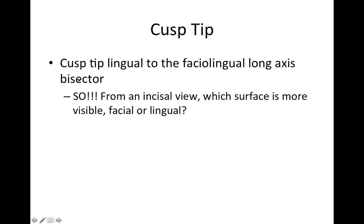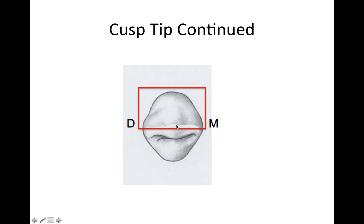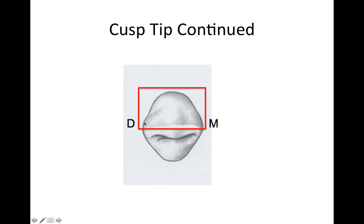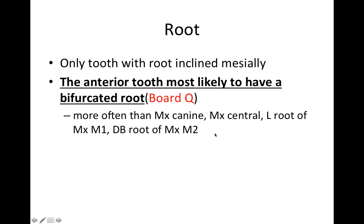You'll see the term 'cusp tip' on the test frequently. From an incisal view, the cusp tip is lingual to the facial-lingual long axis bisector. So here's a question: from an incisal view, which surface is more visible — the facial or the lingual? Because the cusp tip tends toward the lingual, we're going to see more of the facial surface than the lingual.